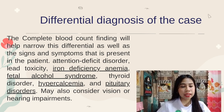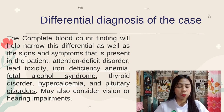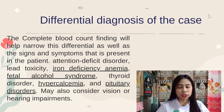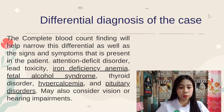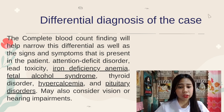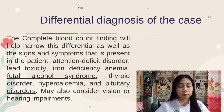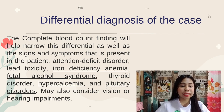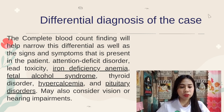Next is iron deficiency anemia, a condition in which the blood lacks adequate healthy red blood cells. We also put fetal alcohol syndrome into consideration, as well as thyroid disorder — a variety of disorders that can result in the gland producing too little thyroid hormone — and hypercalcemia. Pituitary disorder and vision or hearing impairments are also considered. The complete blood count findings will help narrow this differential along with the signs and symptoms present. The final diagnosis will be discussed by Ebona Georgie.